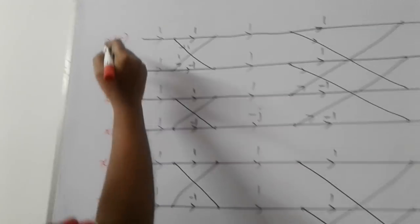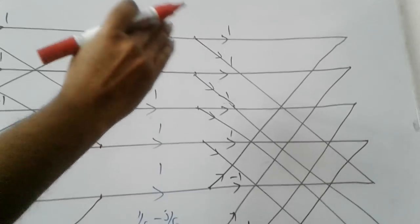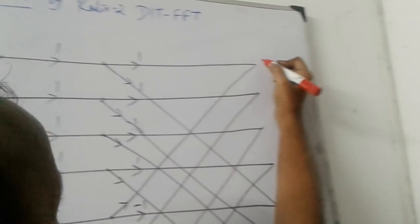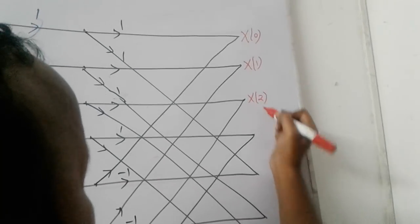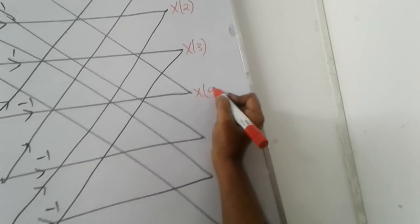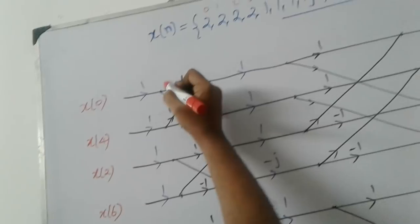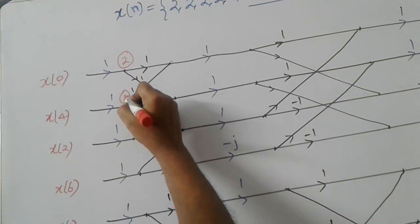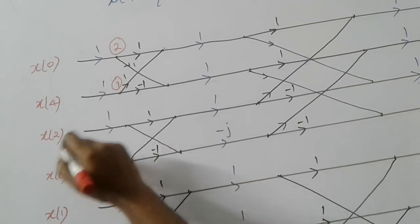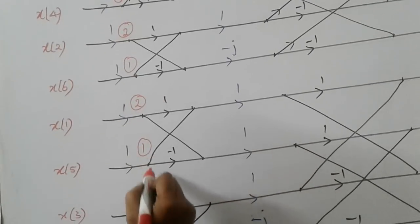Now we will proceed with the problem. The problem given is x of n, four twos followed by four ones. The first value is x of zero, origin. So decimation in time, the input is bit reversal. Bit reversal 0, 4, 2, 6, 1, 5, 3, 7. We are converting time domain x of n to frequency domain capital x of k. Output in DIT is normal order 0 to 7.